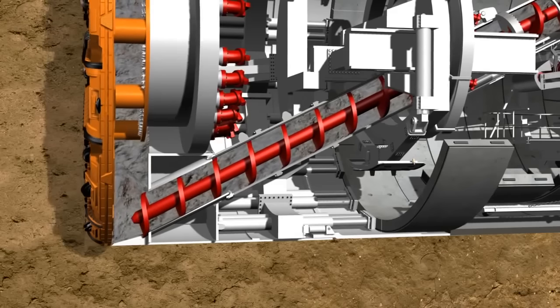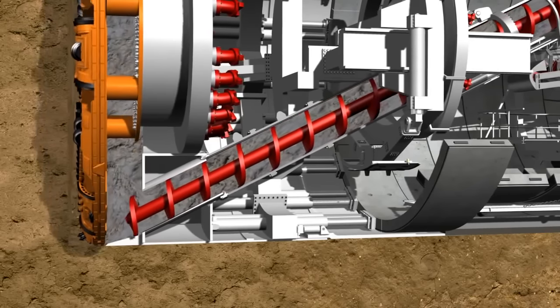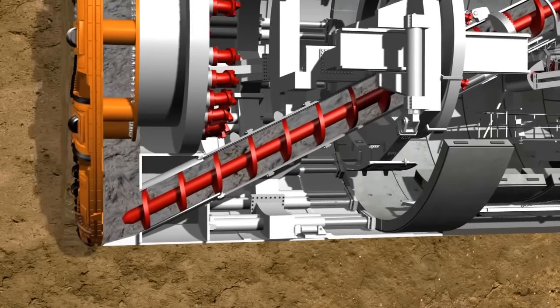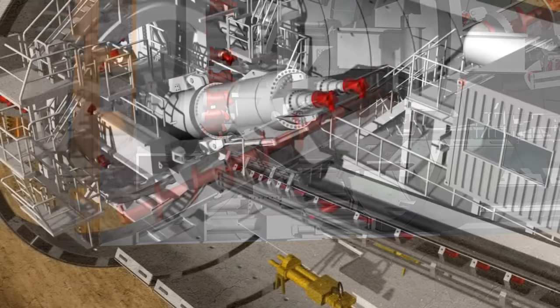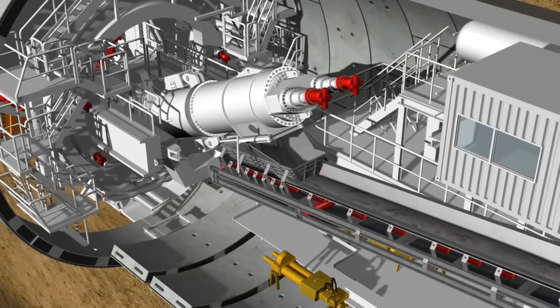The soil prepared in this way can now be transported from the invert area of the excavation chamber to a belt conveyor by a screw conveyor. The screw conveyor is driven by two hydraulic motors, which have a power of up to 400 kilowatts.